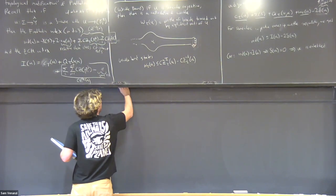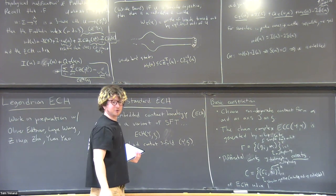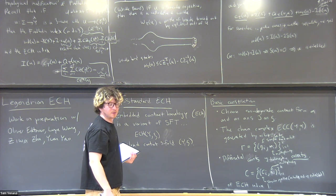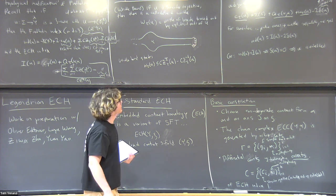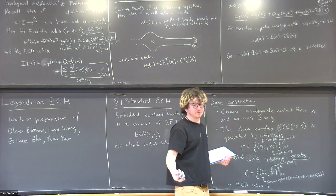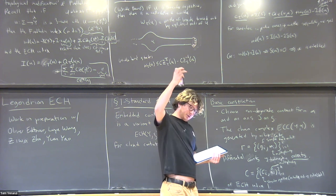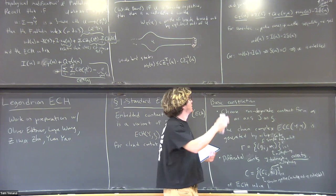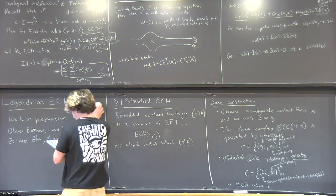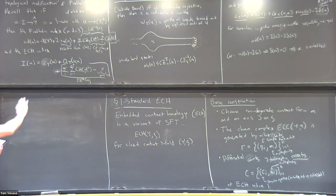Another thing you can say: if something is ECH index one, that implies that it consists of a single connected Fredholm index one component plus a bunch of trivial ones. So today what I'm going to do is basically explain a relative version of all that.